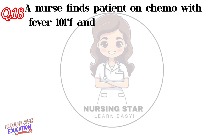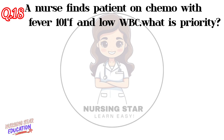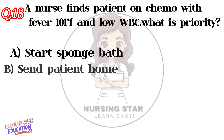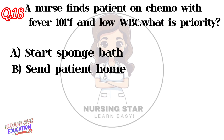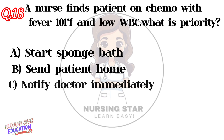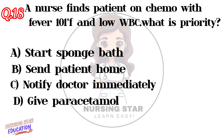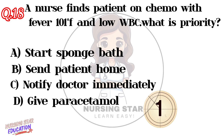Question number eighteen: A nurse finds a patient on chemo with fever 101°F and low WBC. What is the priority? Option A: Start sponge bath. Option B: Send patient home. Option C: Notify doctor immediately. Option D: Give paracetamol. Correct answer: C — Notify doctor immediately.